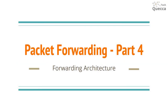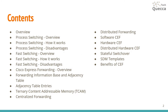Hello everybody. Today I would like to speak a little bit about forwarding architecture. We will discuss process switching, fast switching, Cisco Express Forwarding, forwarding information base and adjacency table. I will try to explain ternary content addressable memory, centralized forwarding, distributed forwarding, software CEF, hardware CEF, distributed hardware CEF, stateful switchover, SDM templates, and also benefits of CEF. Let's get started.